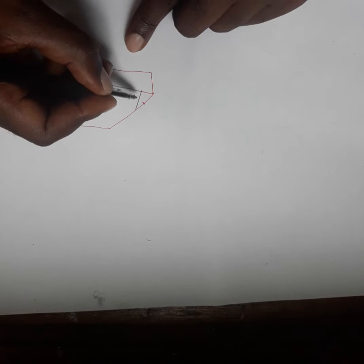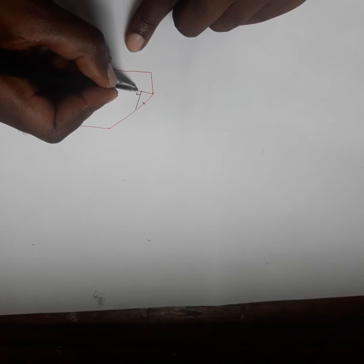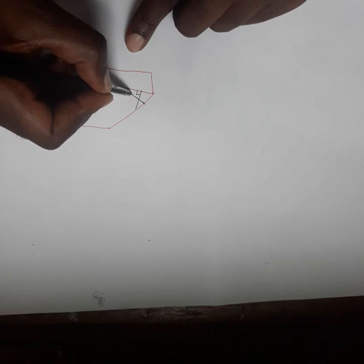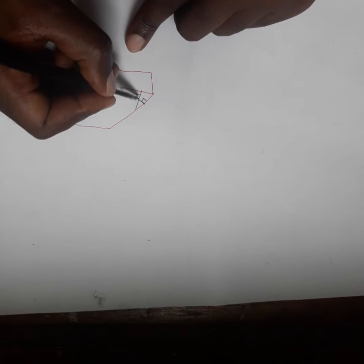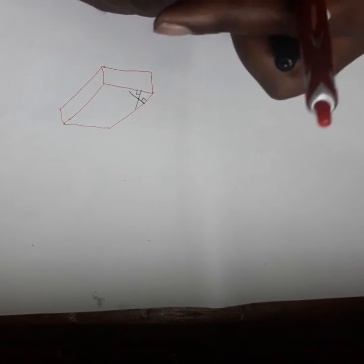Then you draw a line. This one must be perpendicular to this line. Also draw another line here. This line must also be perpendicular to this one. Where they meet is your center point.